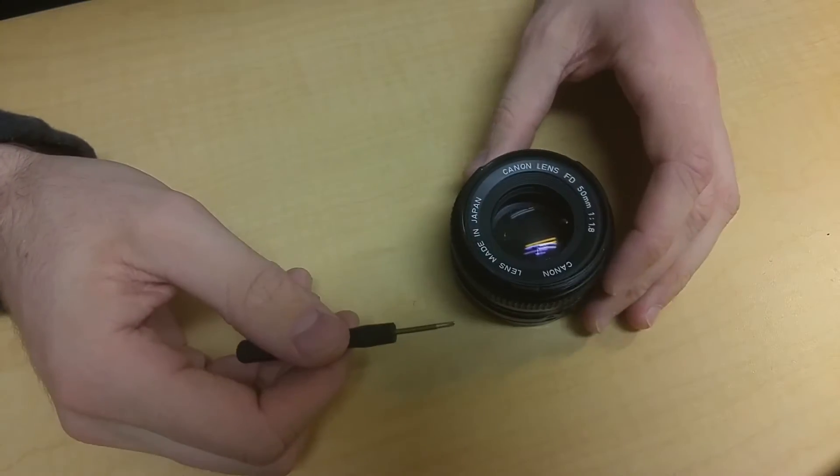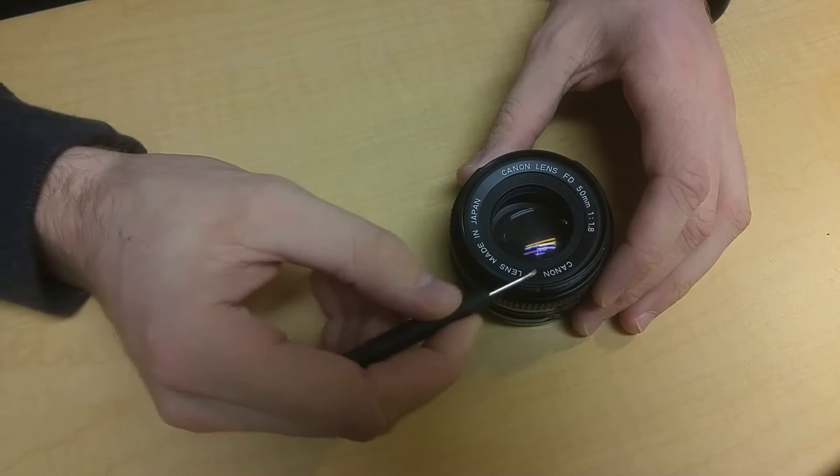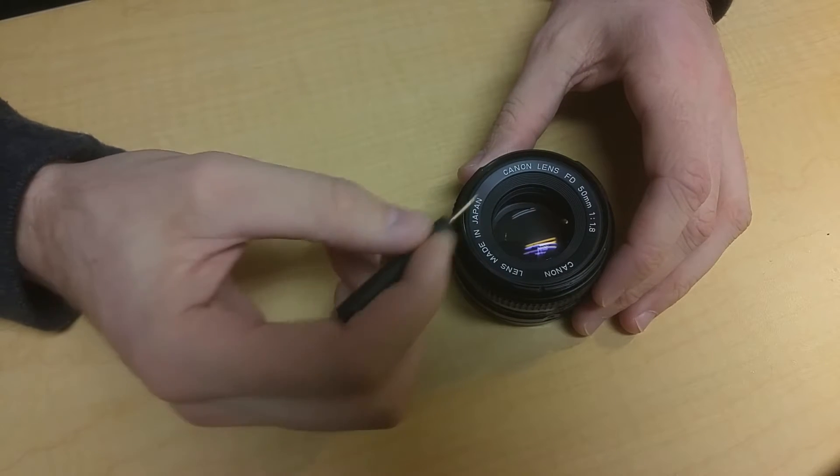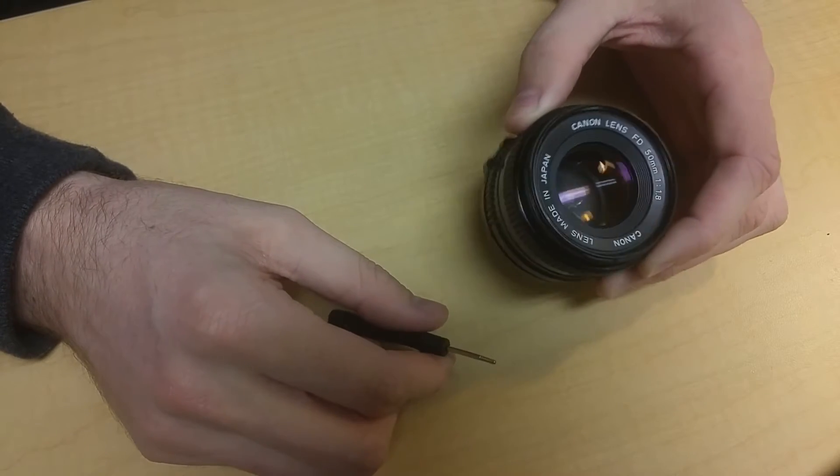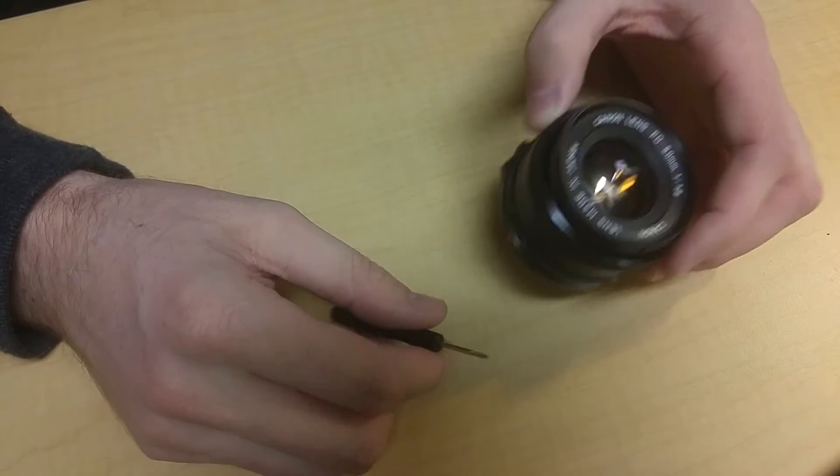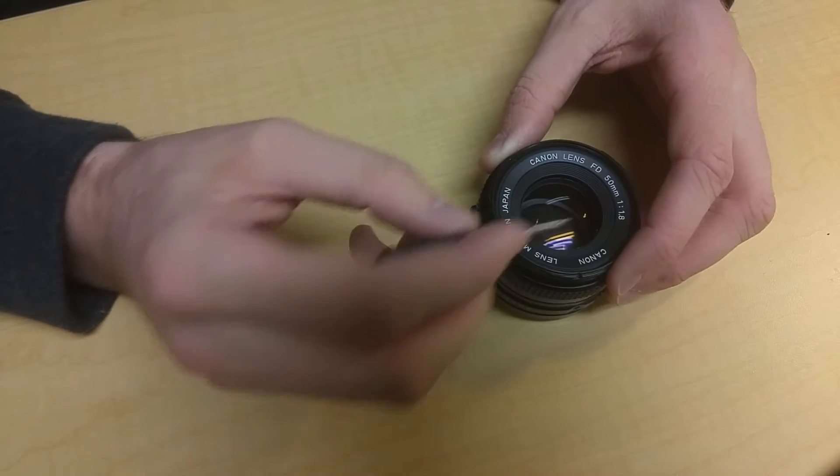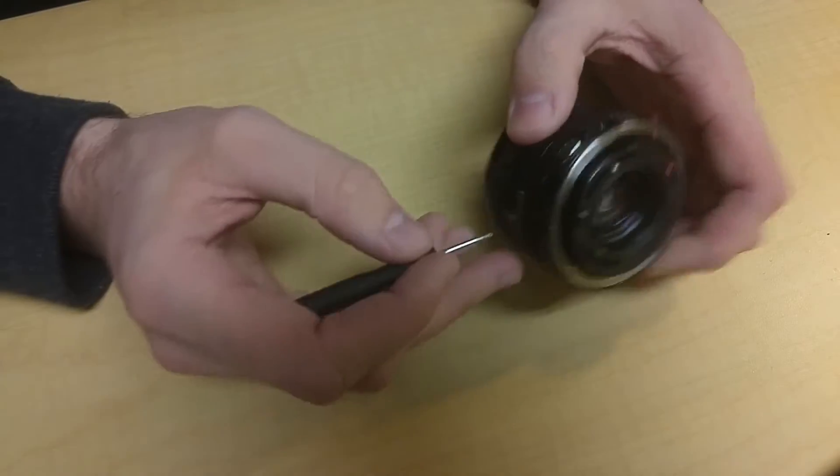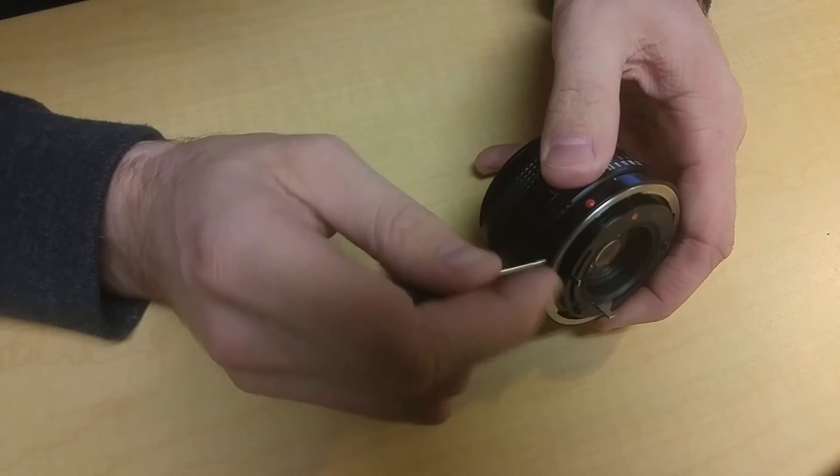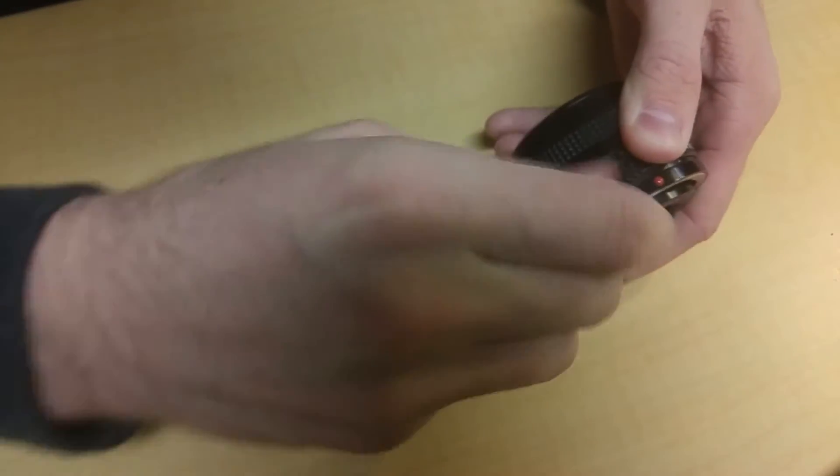Alright, so today I'm going to be showing you how to disassemble a Canon FD lens. This is a 50 millimeter prime. This will work on the 50 millimeter and pretty much any Canon FD primes. What you want to do to first start out is remove the side screws that are right there.